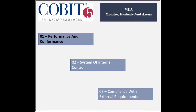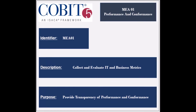The fourth and last management domain of the COBIT process is called Monitor, Evaluate and Assess. It has three processes, and the first process is to monitor, evaluate and assess performance and conformance. The identifier of the process is MEA1. The process ensures that IT and business goals and metrics are collected and evaluated.